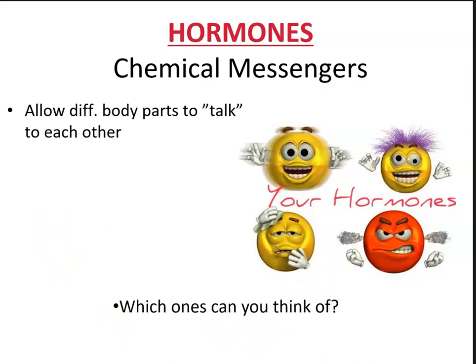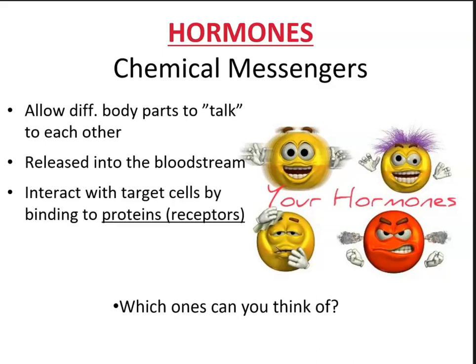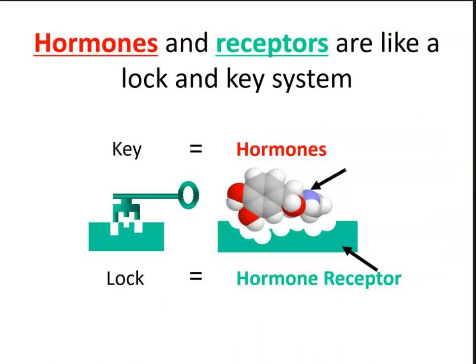Hormones are released into the bloodstream and interact with target cells by binding to protein receptors. The structure of hormones and receptors is like a lock-and-key system — receptors are very specific for the shape of the hormone. Hormones are large molecules floating in the bloodstream that must fit into a specific receptor in order for that message to be transported to the effector organ.